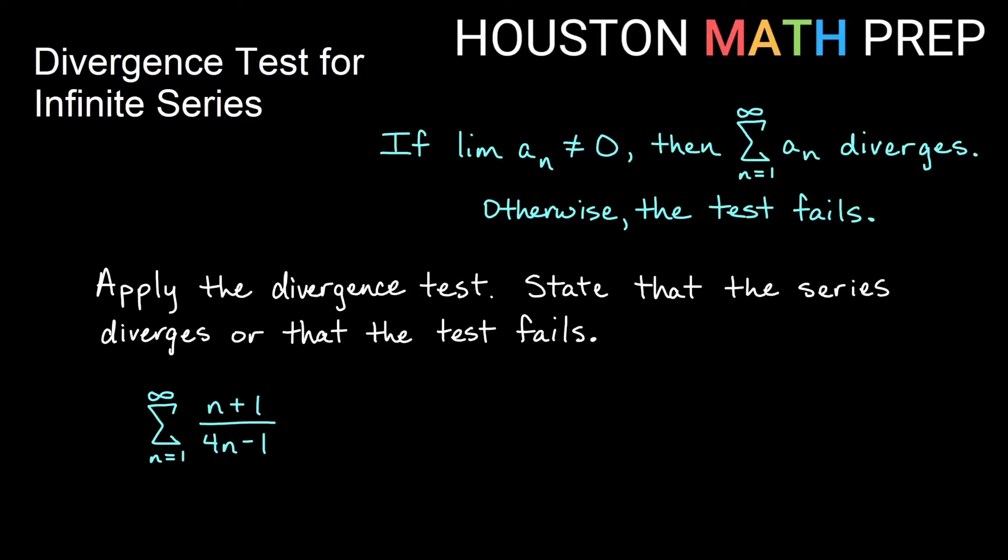Now the test can fail, so let's look at an example. We want to apply the divergence test and state if the series diverges or that the test just fails. Remember, it can't converge by the divergence test. So if I have the sum of n plus 1 over 4n minus 1, you might be able to look at this and know from pre-calculus what the limit is or what the horizontal asymptote of this would be. This is indeterminate form, but one iteration of L'Hôpital's rule will tell us that the limit is actually 1 fourth here.